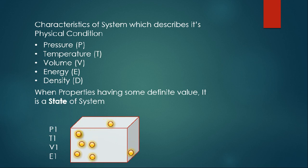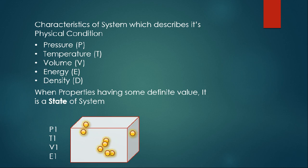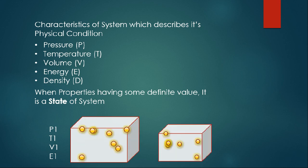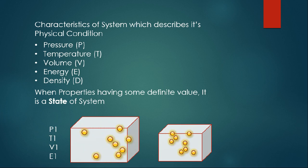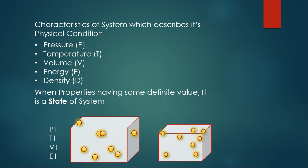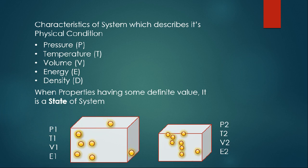These are the properties, and when we specify definite values to all these properties it becomes a state of the system. Consider another system — a smaller cube containing condensed gas — having another pressure P2, temperature T2, volume V2, and energy E2.